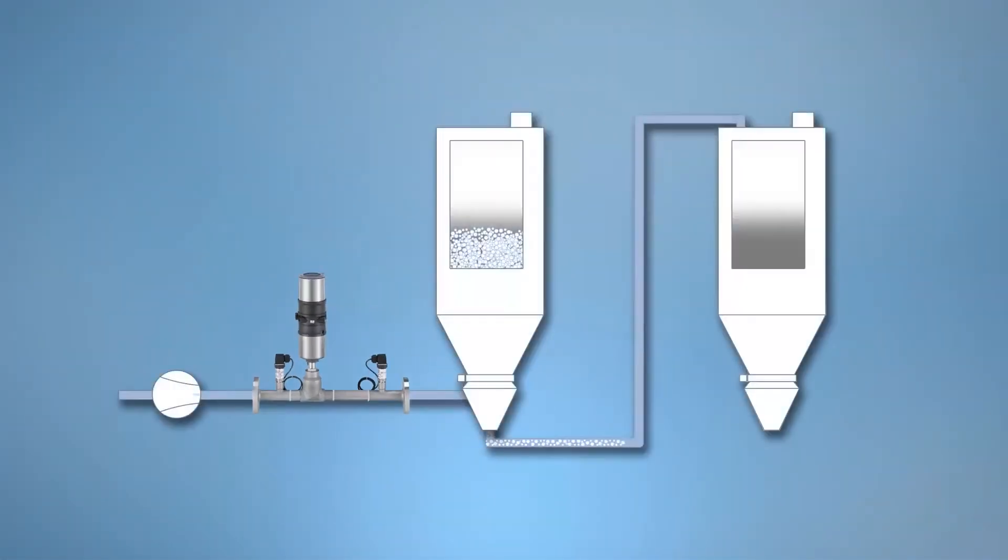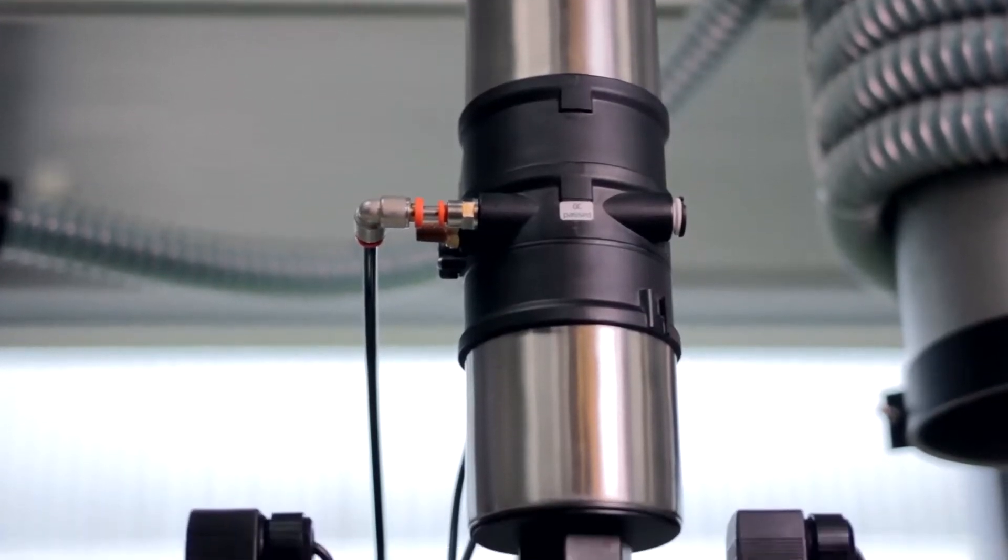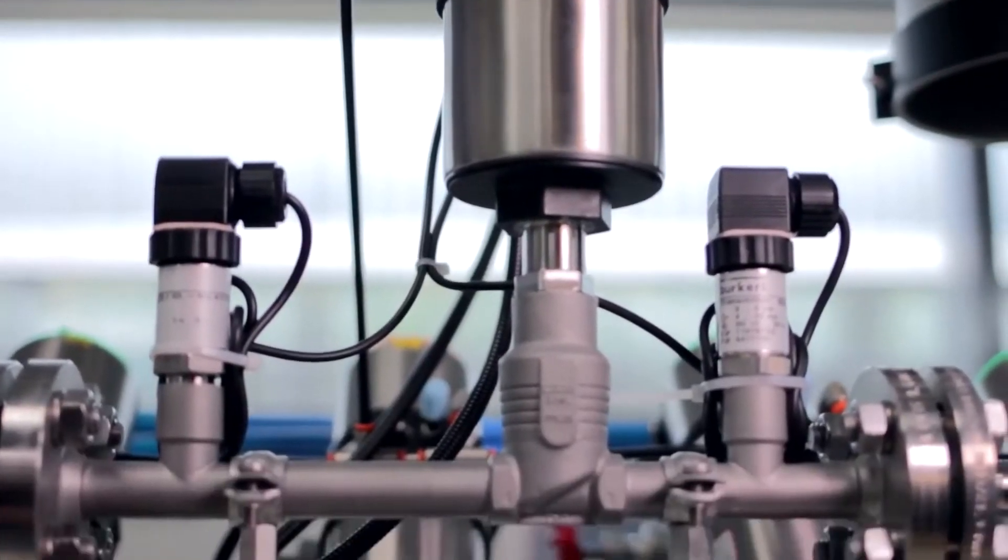Type 8750 is an air flow rate controller which consists of a control valve, two pressure transmitters and an electronic flow controller. All these components are part of a closed control loop.